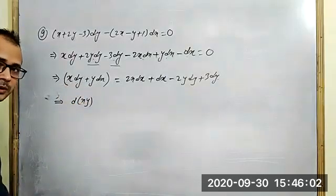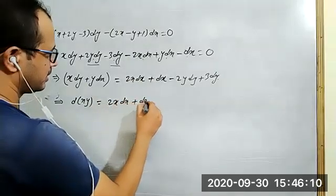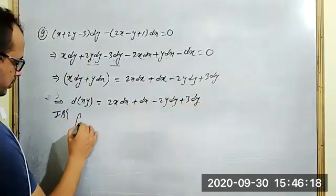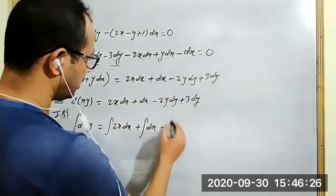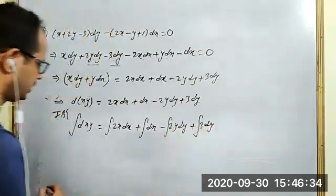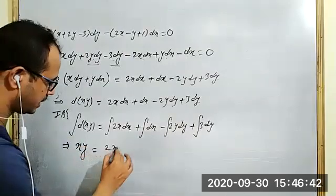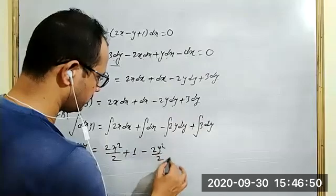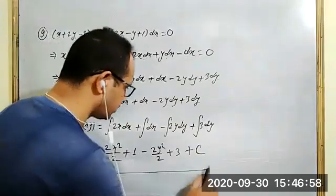Rearranging, we get 2x dx plus dx minus 2y dy plus 3 dy plus xy. Integrating both sides, we have dxy equal to 2x dx minus 2y dy plus 3 dy. Your xy is equal to 2x squared by 2 minus 2y squared by 2 plus 3y plus constant. Simplifying, this will be our required solution.